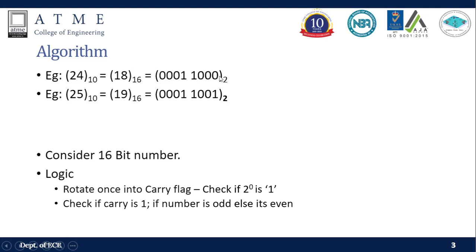From hex you can directly write the binary, so 0x18 gives you that binary number — '1' and '8' in binary. Similarly, taking the number 25, it is 0x19 in hex, giving us '1' and '9' in binary. I have chosen 24 and 25 so that we have one even number and one odd number in our example.